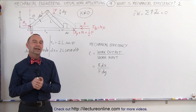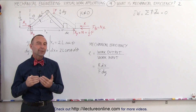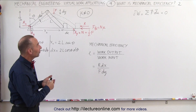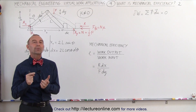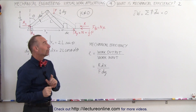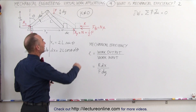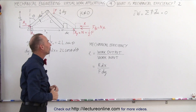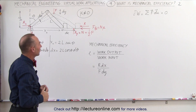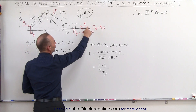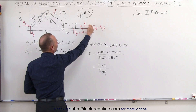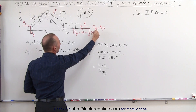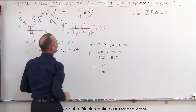Welcome to ElectronLine. To get a better idea of what mechanical efficiency is, we're going to do the very same problem we did on the previous video with one difference. In this case, the coefficient of friction is not equal to zero, which means we're going to have, in addition to the force pushing back against the block, a friction force pushing in this direction as well.